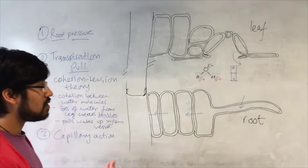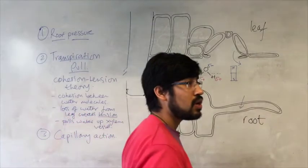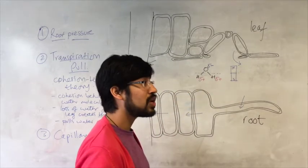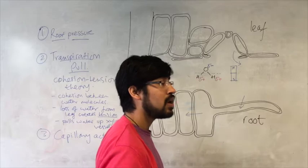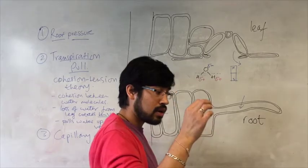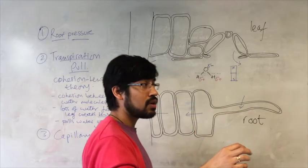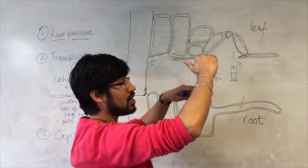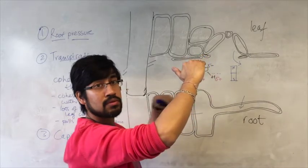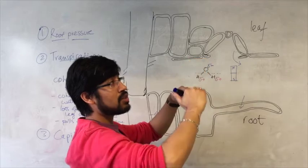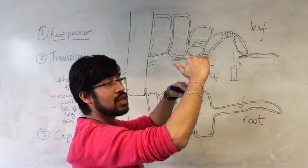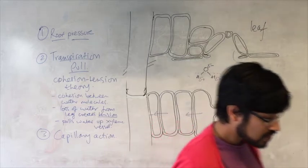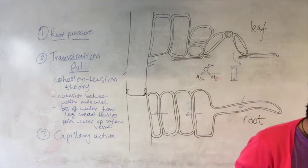If you want to see this for yourself, take a very thin straw — less than five millimeters — and put it in a glass of water. The level of water in the straw will be a bit higher than the level of water in the cup. Why did the water go higher than the level in the cup? Because of capillary action.